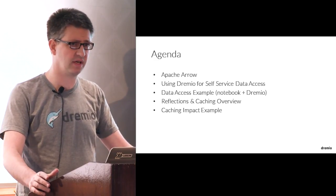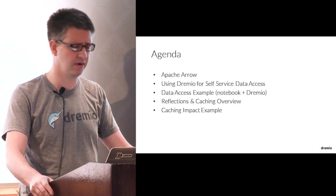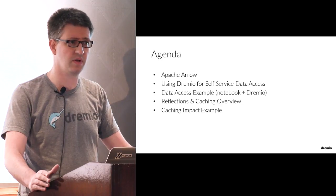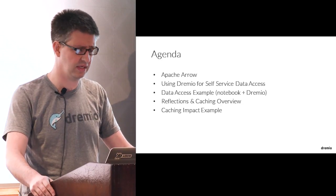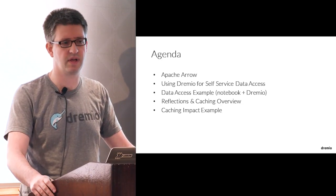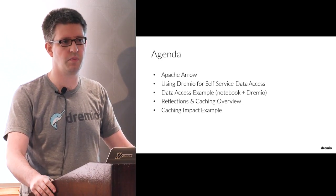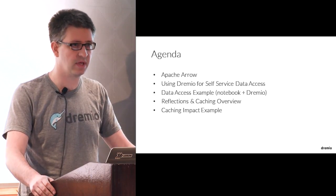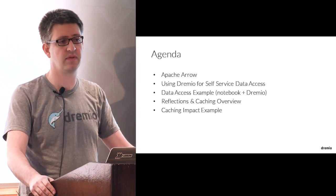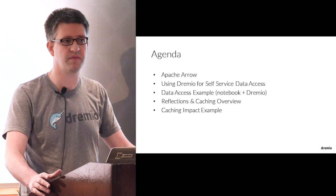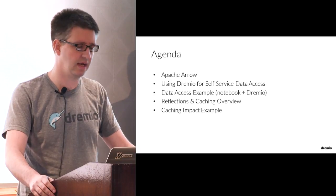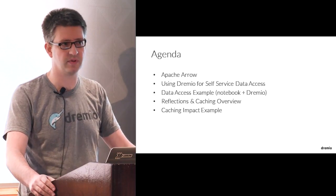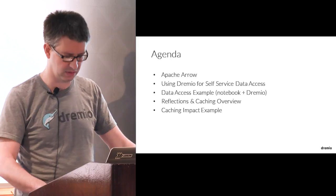I'm going to start by talking about Apache Arrow. Then I'll talk a little bit about Dremio and how Dremio uses Arrow. Then I'm going to give you some examples of notebooks and how to access different types of data. Then I'll go into what we call reflections, which is a form of caching, and show you some examples of what that impact looks like.